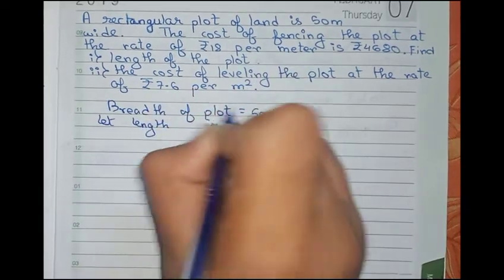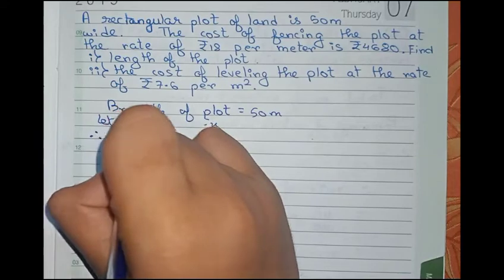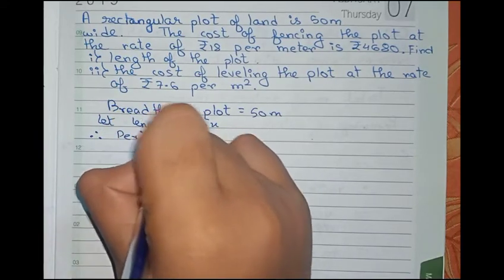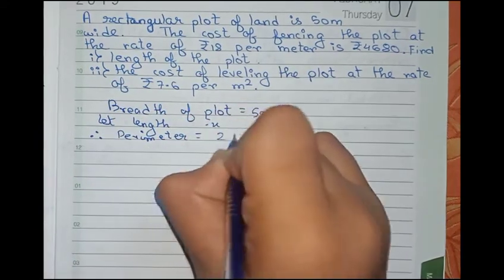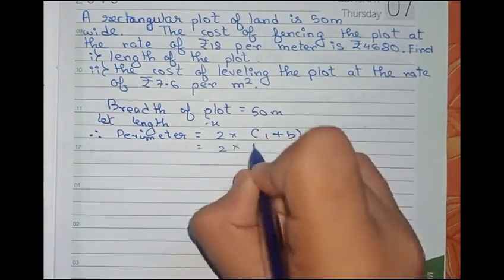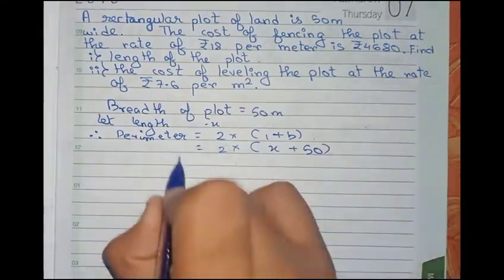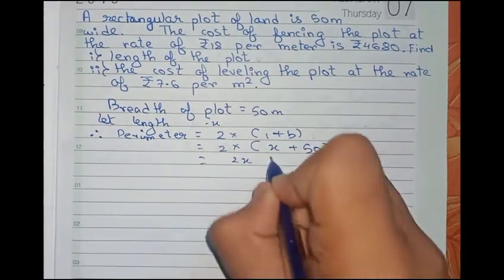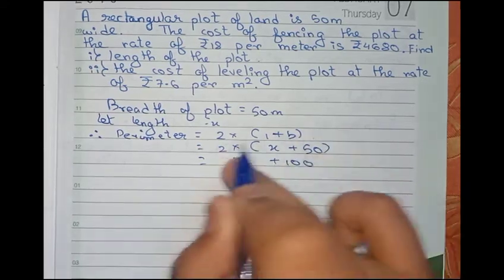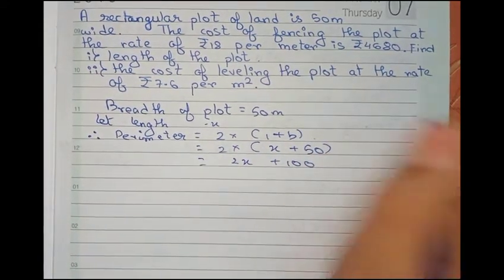Therefore, we find the perimeter. Perimeter equals to 2 times length plus breadth, our formula. So it will be 2 times x plus 50, which equals 2x plus 100.